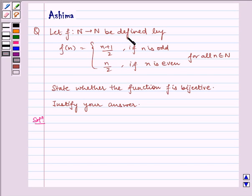Let f be a function from N to N defined by f(n) equals (n+1)/2 if n is odd, and n/2 if n is even, for all n belongs to N. State whether the function f is bijective. Justify your answer.